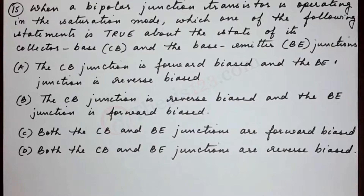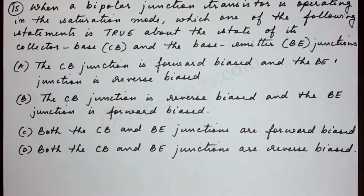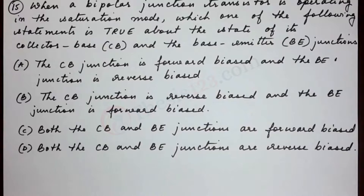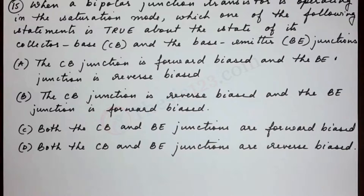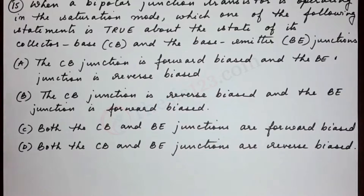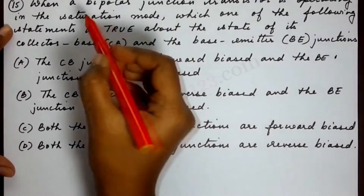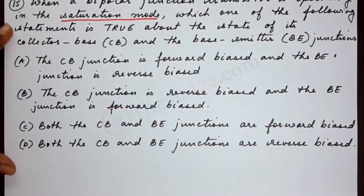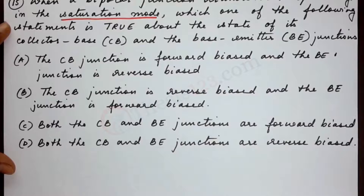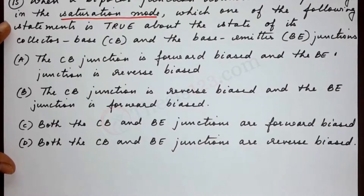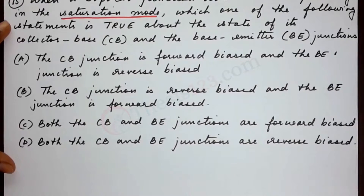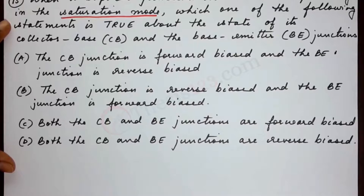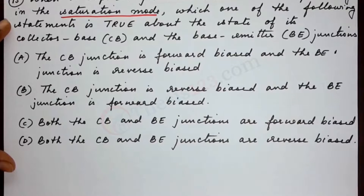In this question, the key is to look at what kind of mode the transistor is operating in. Over here it is said that the transistor is operating in saturation mode. The fact is that in the saturation region, both the emitter-base and base-collector junctions are forward biased.